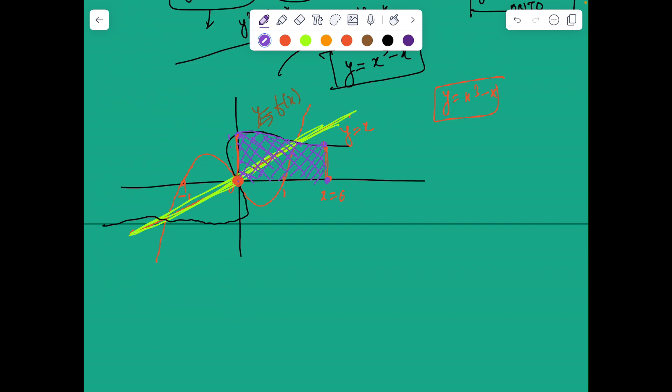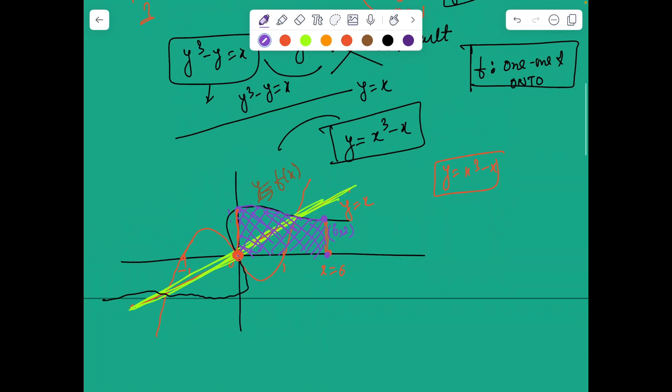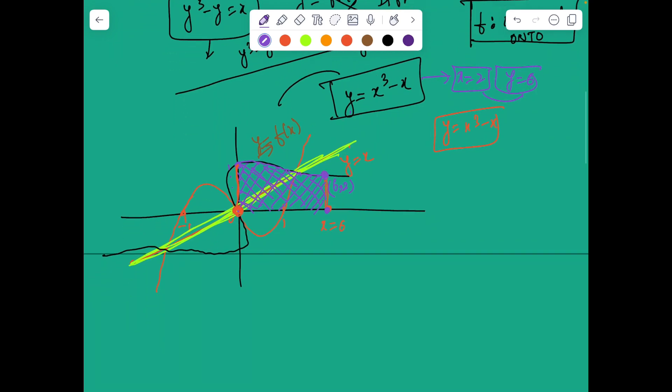So the clever trick is at x equal to 6, the value of the function must be 2. Why? Because at x equals 2, we'll get y as 6. So at x equal to 2, y value is 6. So for the original function at x equal to 6, we'll get 2. So this point is 6 comma 2, right.